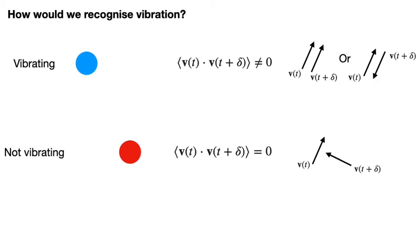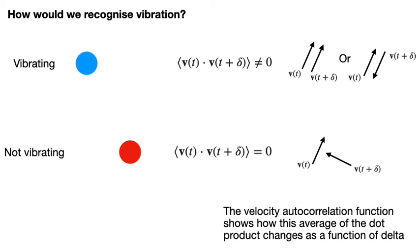This simple idea of calculating the average of the dot product of the velocities at times separated by a time lag of delta that I've explained on this slide is the basic idea we use when we compute the velocity autocorrelation function. We can use this autocorrelation function to answer the question that I posed at the start of the slide, namely, are the atoms vibrating around their lattice sites, as we would expect them to do if the material was in the solid state.